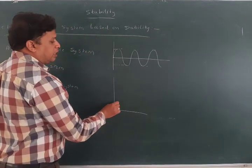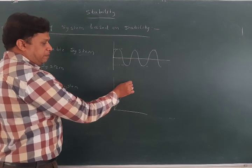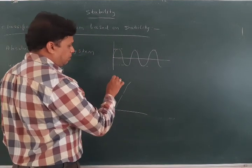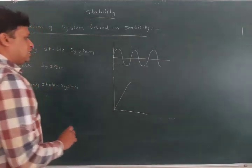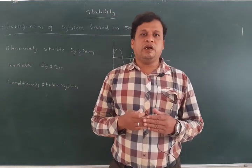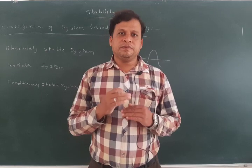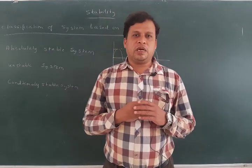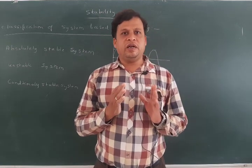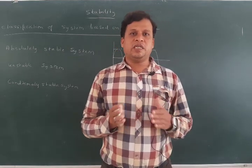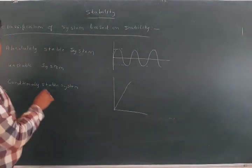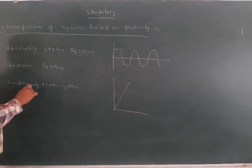An unstable system is one where we cannot predict the nature — it can be rising high or coming lower. A conditionally stable system is one that is stable under certain conditions and unstable under others — for a definite time it will be stable and for a definite time it will be unstable. These are the three types: absolutely stable, unstable, and conditionally stable.